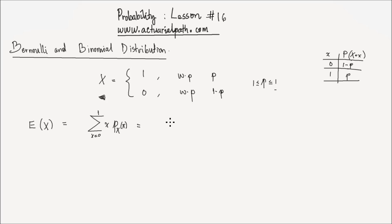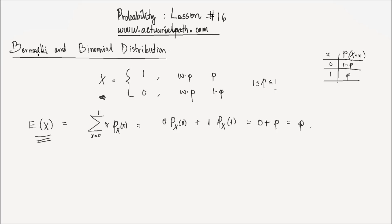That is equal to 0 times the probability that x takes a value of 0, plus 1 times the probability that x takes a value of 1. That equals 0 plus 1 times p, which is p. Therefore, the expected value of a Bernoulli random variable is equal to p, which is the probability of success.